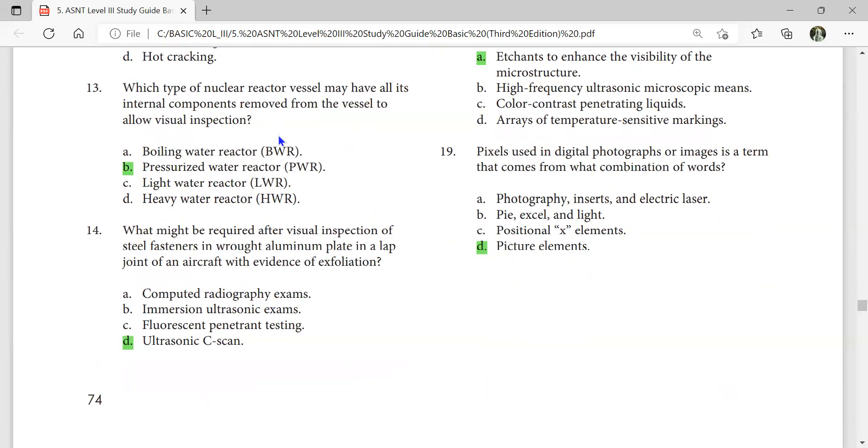What type of nuclear reactor vessel may have all its internal components removed from the vessel to allow visual inspection? Pressurized water reactor.